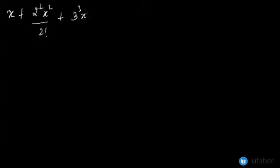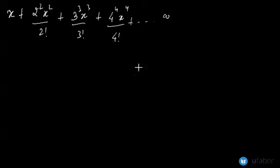Let us start this video lecture by taking an example in continuation with the previous video on the ratio test. Let's look at this series: x plus 2² x²/2! plus 3³ x³/3! plus 4⁴ x⁴/4! and it goes on up to infinity. Let us find out u_n in this case.